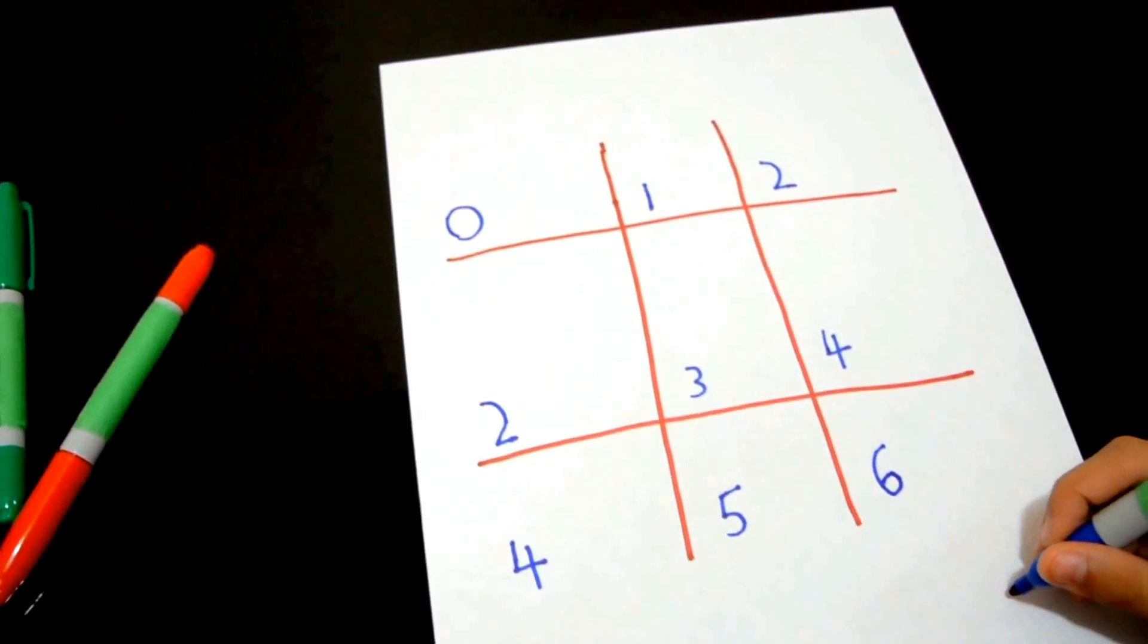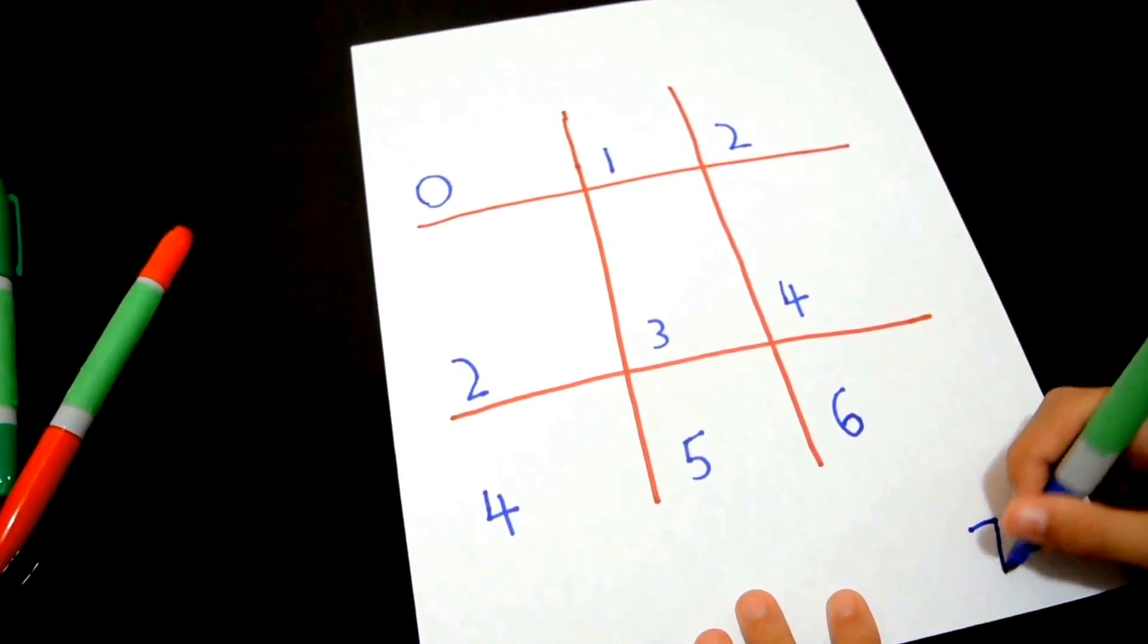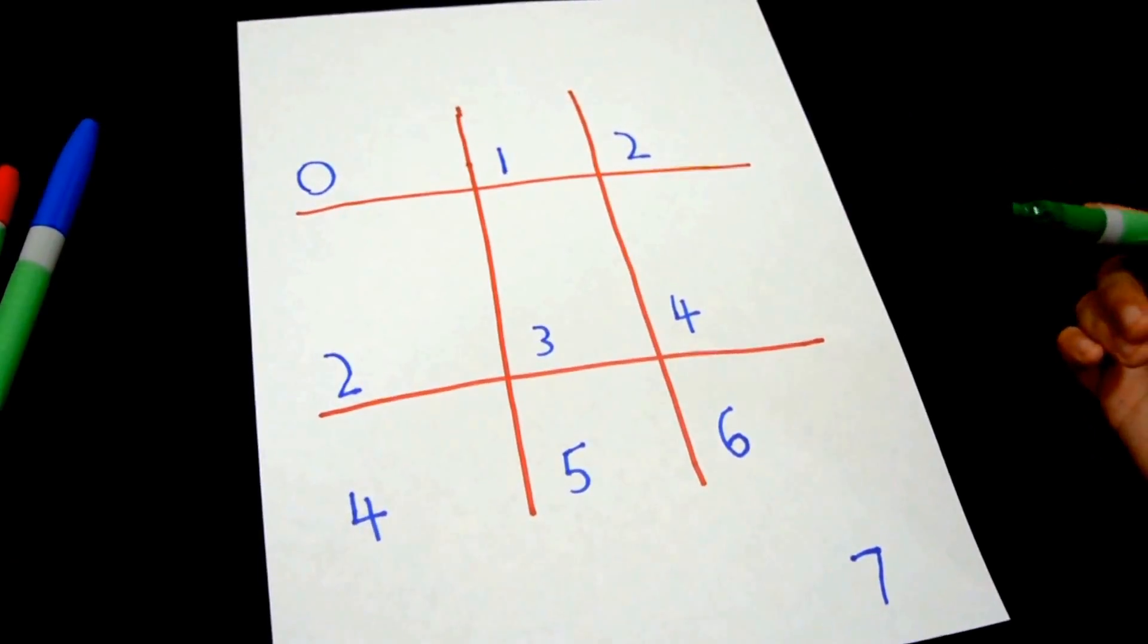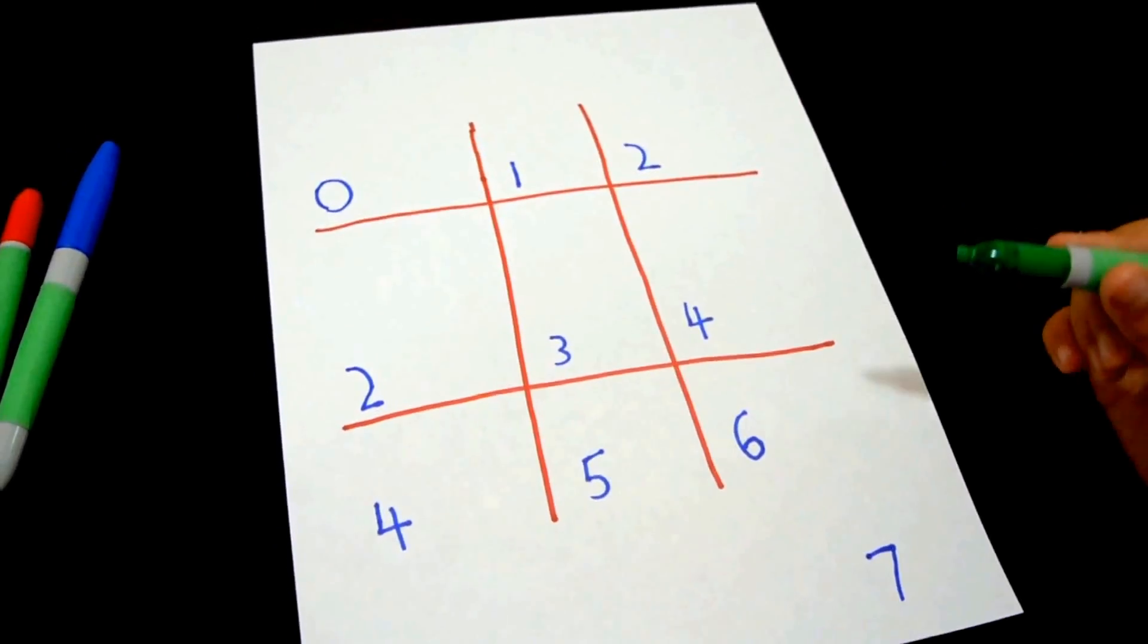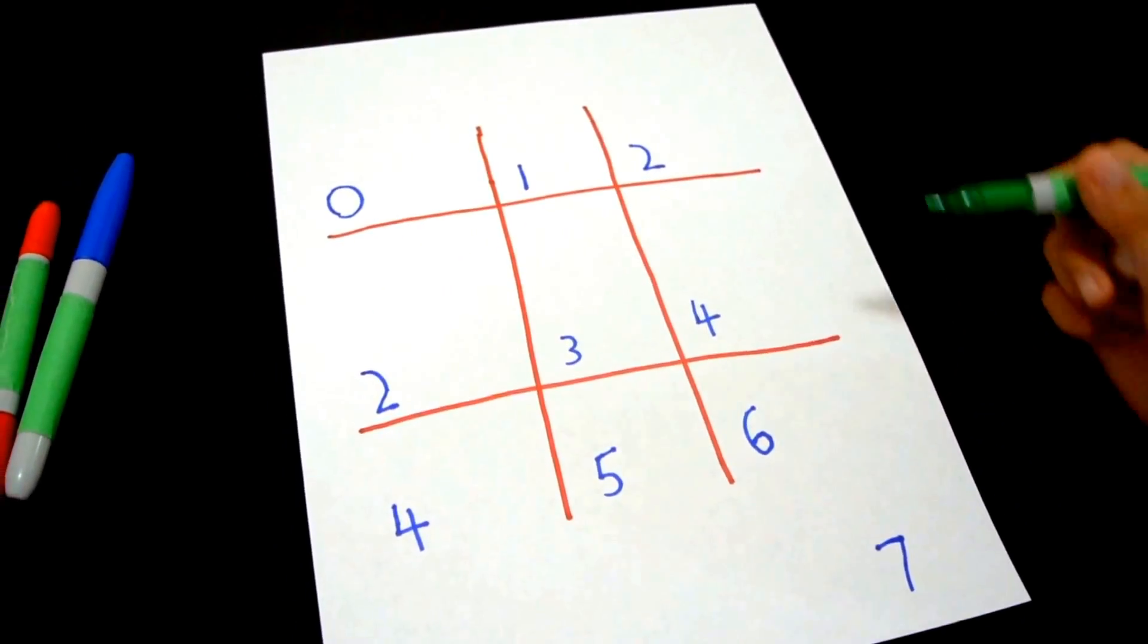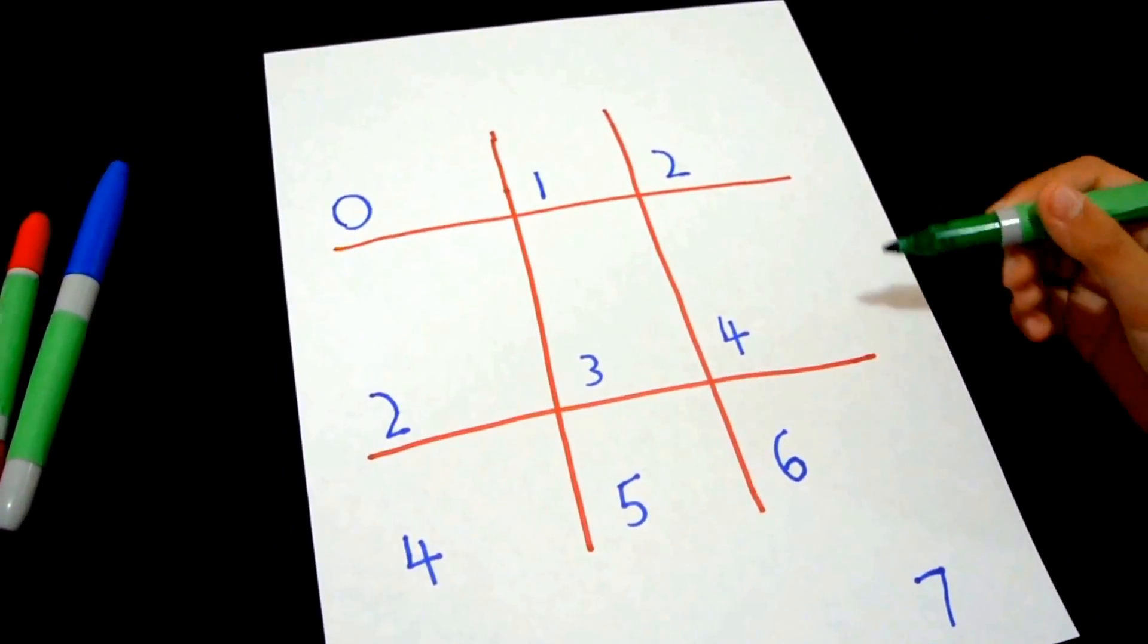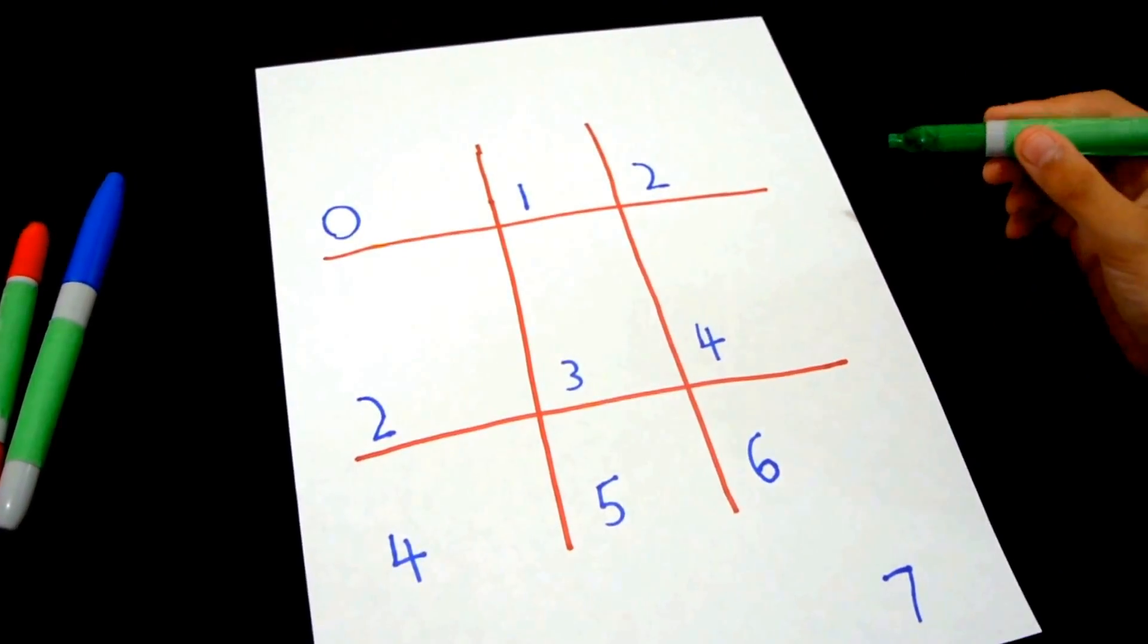Then write the number 7 over here. Now write the numbers from 1 to 9, starting from the top to the bottom and from the right to the left.